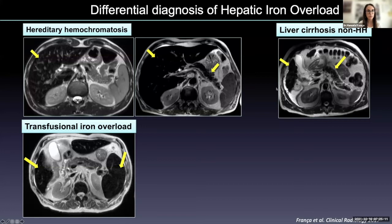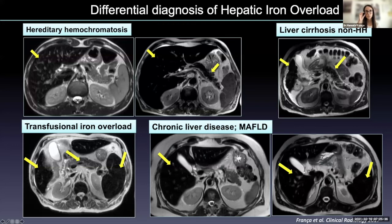This pattern is not pathognomonic of hereditary hemochromatosis because we can also see it in patients with liver cirrhosis from other causes. Patients with secondary hemochromatosis usually present with iron in the liver, but also in the spleen and even the bone marrow — a reticuloendothelial system pattern. Patients with chronic liver diseases such as alcoholic liver disease, viral hepatitis, or NAFLD may present iron only in the liver, or also with a reticuloendothelial system pattern with iron in liver and spleen.